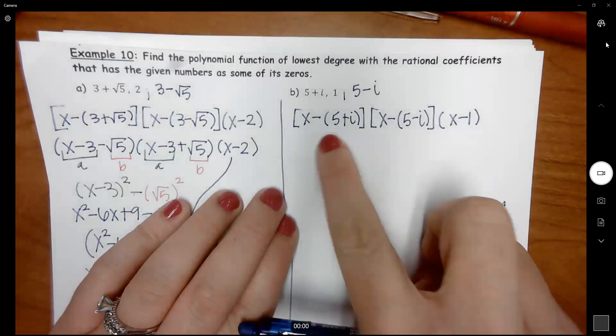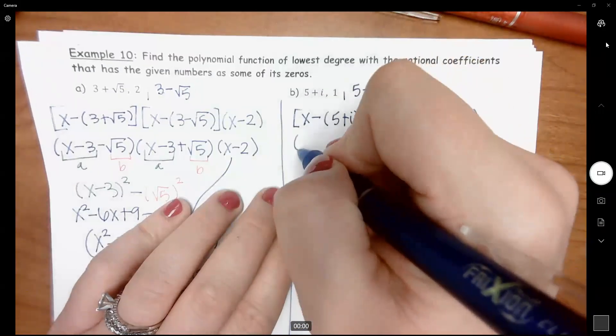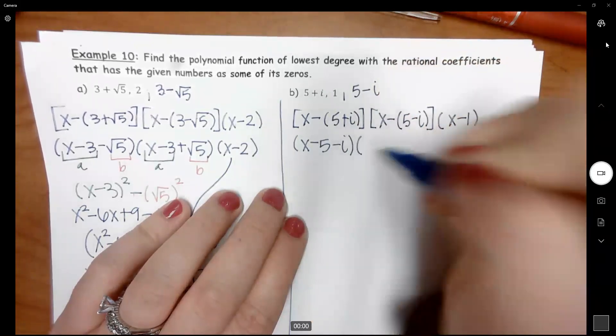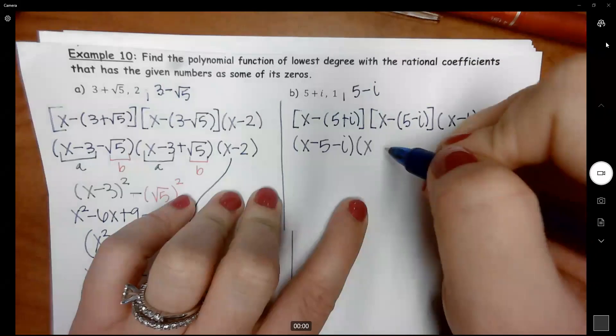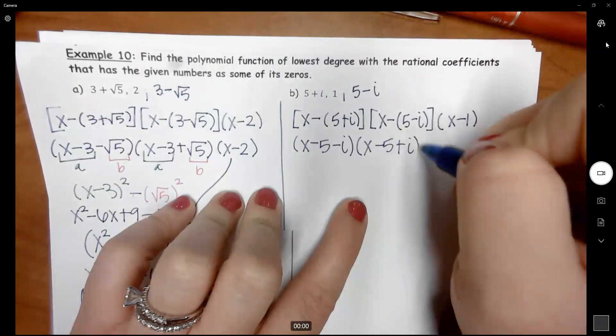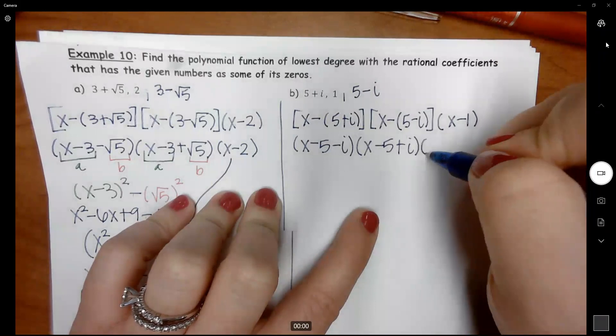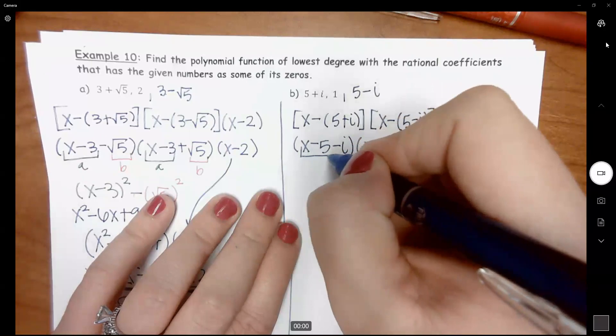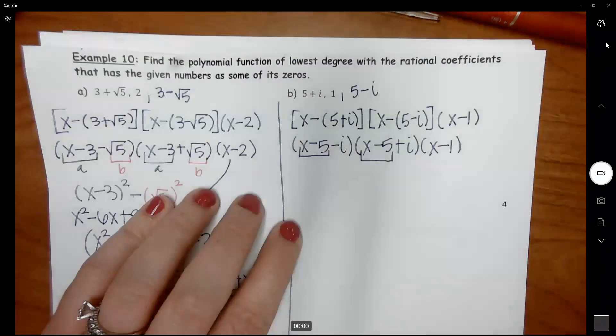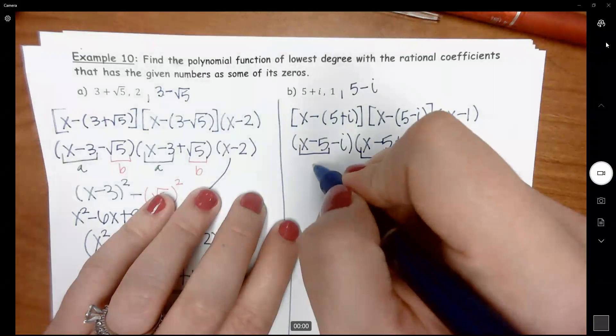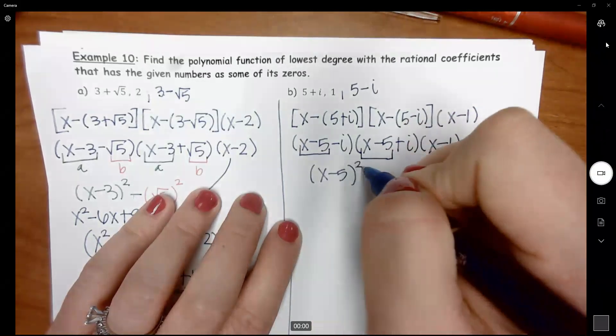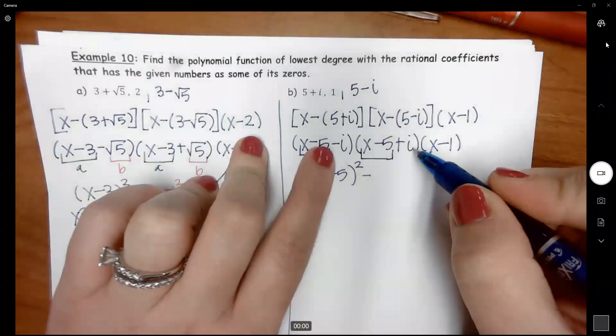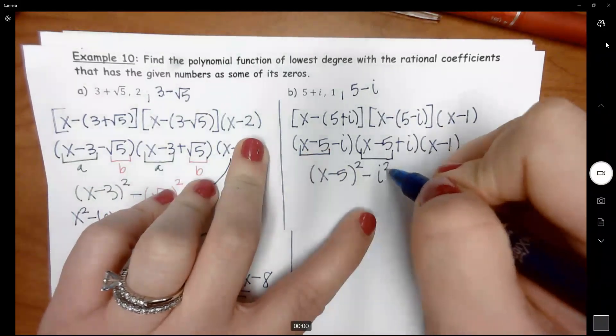Let's distribute the negative on both of these. And I get X minus 5 minus i and X minus 5 plus i. Bring down your X minus 1. So notice here I've got X minus 5 twice. That's X minus 5 squared minus we have two i's, i squared.